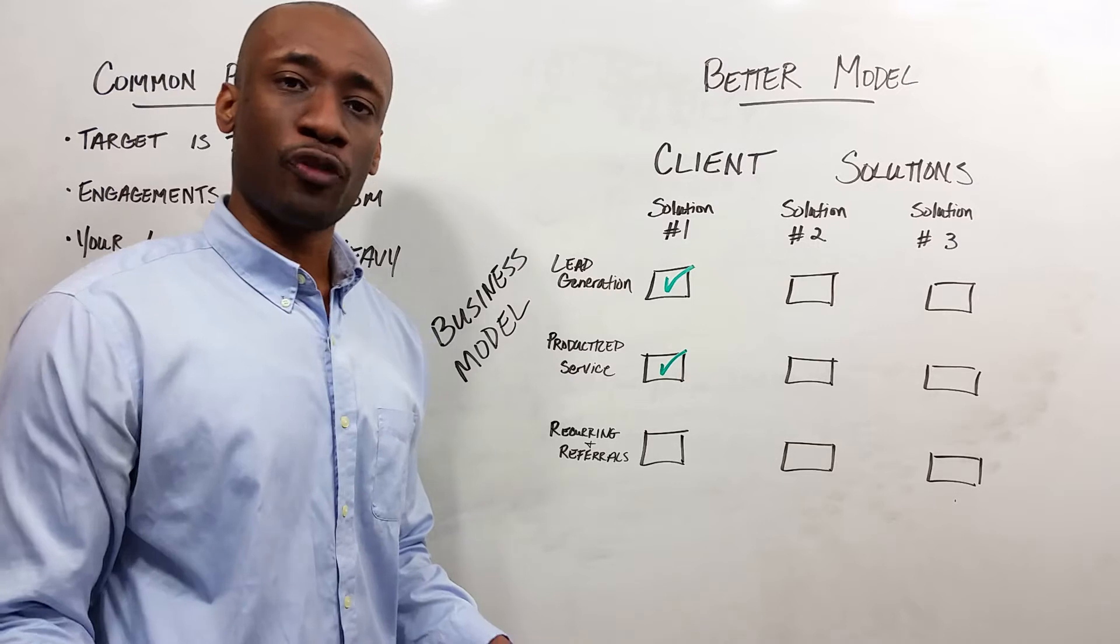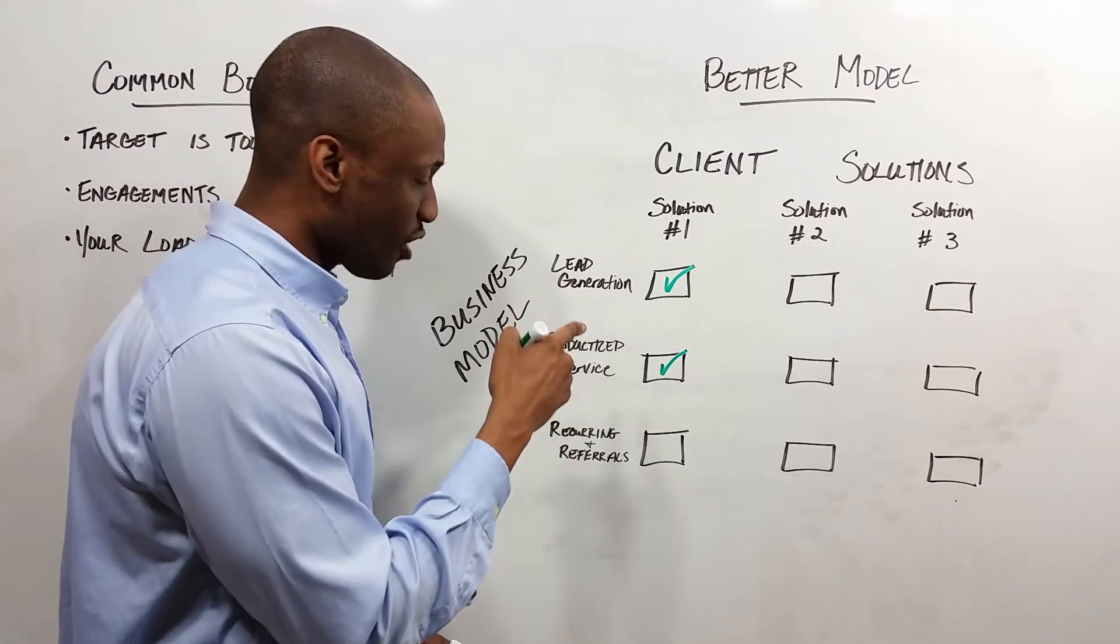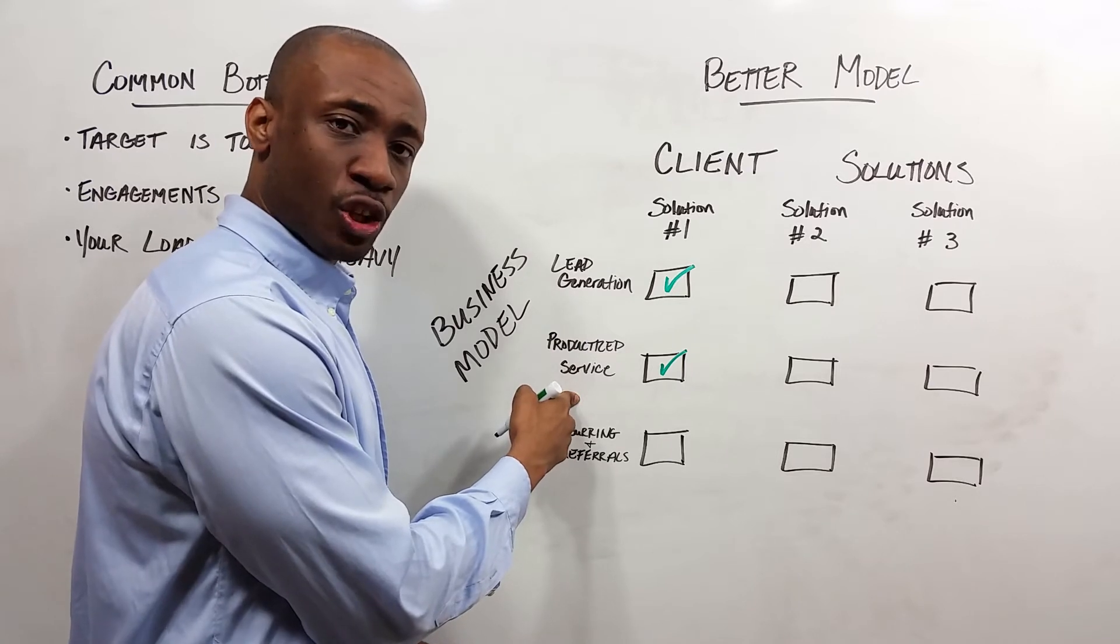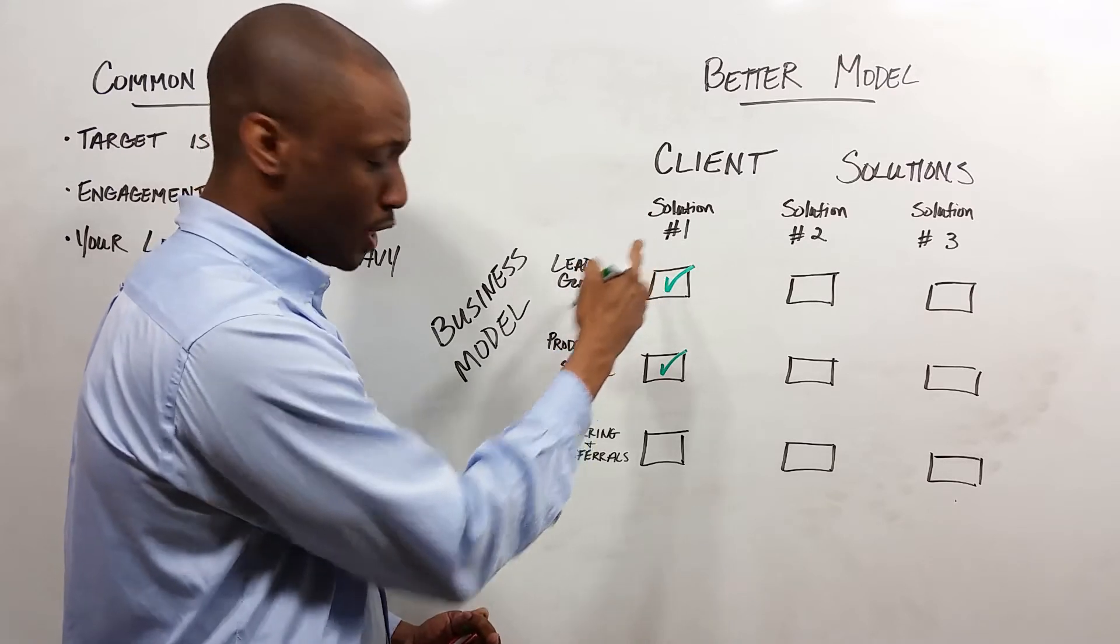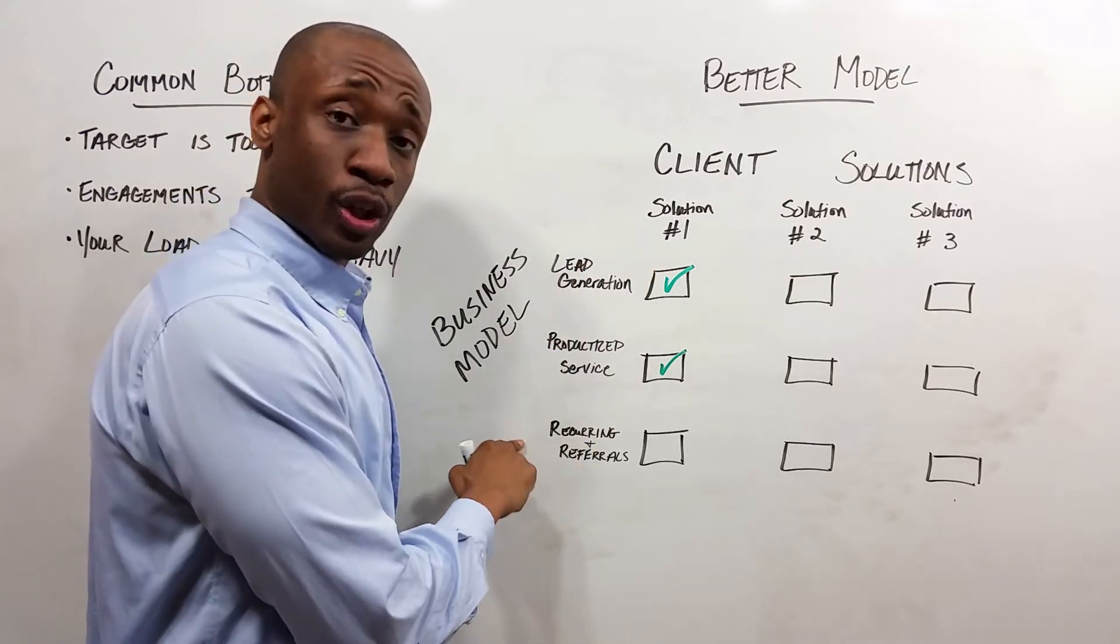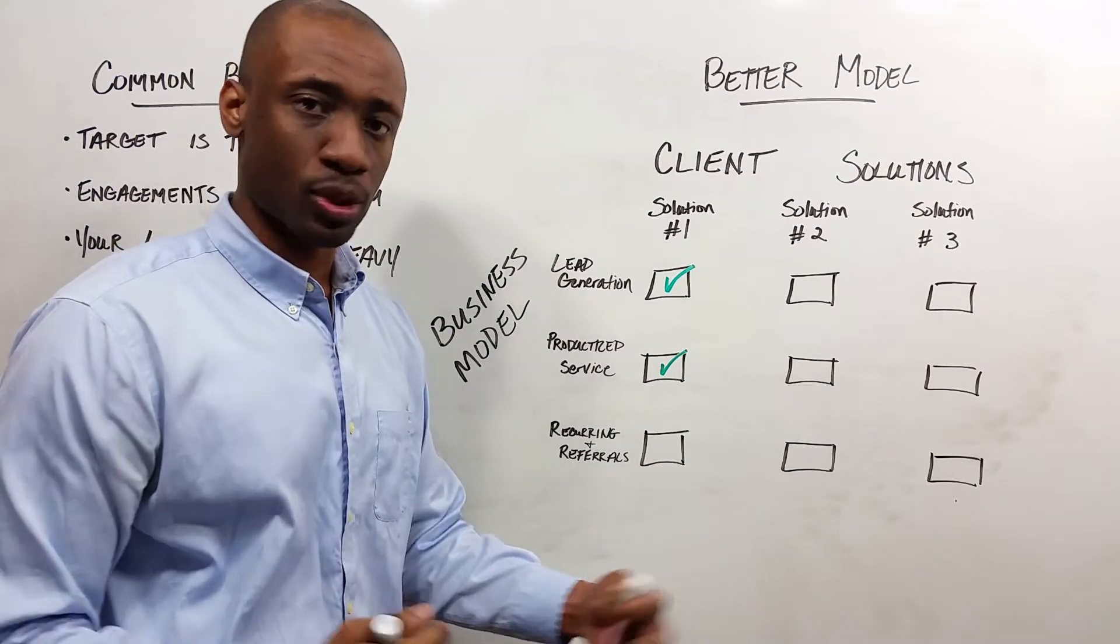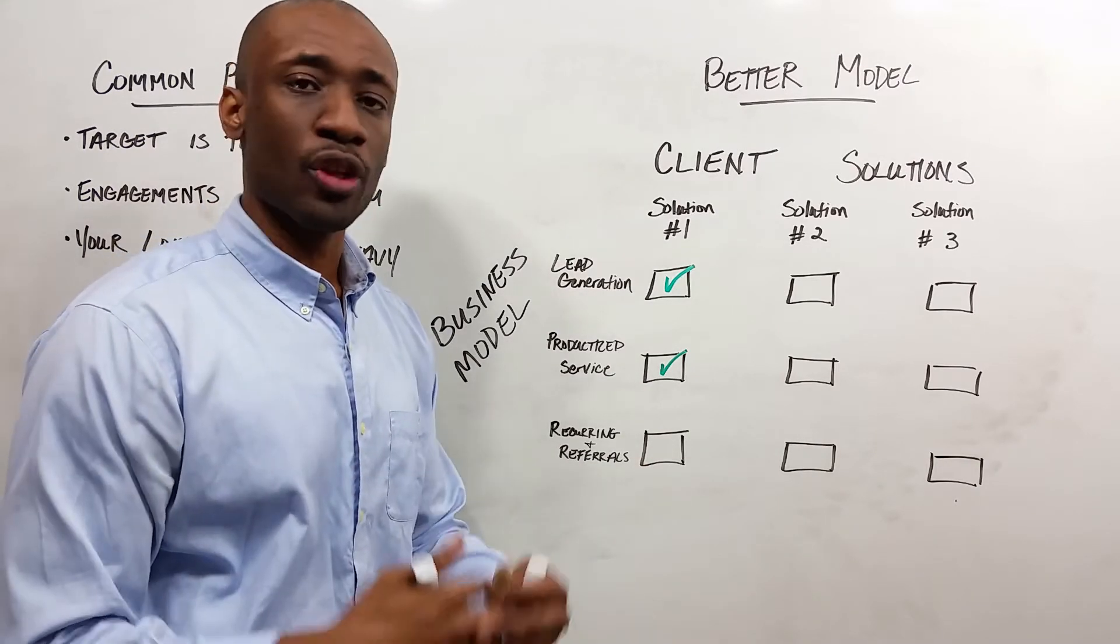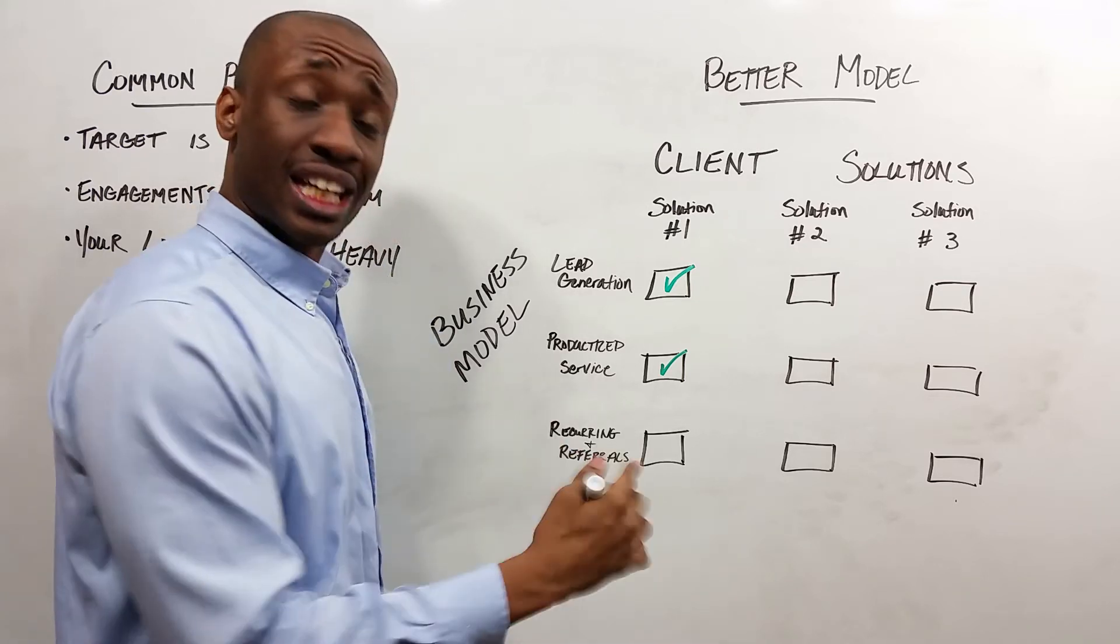So then recurring and referrals. Once you've generated a very specific lead for a very specific productized service, then they'll be wowed by what you've solved because now you've solved the real problem. So what you can do for a recurring element is you can simply offer check-ins, check-ups once a month, twice a month, once a week, whatever makes the most sense for your business. But now they are, they got you on retainer.